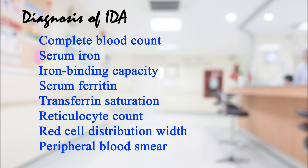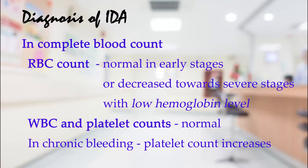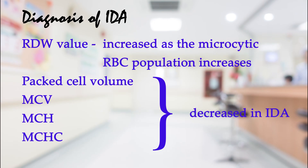Complete blood count, serum iron, iron binding capacity, serum ferritin, transferrin saturation, reticulocyte count, red cell distribution width, and a peripheral blood smear are useful tests to diagnose IDA; bone marrow examination is also done rarely. In the CBC, RBC count is either normal in early stages or decreased in severe stages with low hemoglobin. WBC and platelet counts are mostly normal, though platelet count increases in chronic bleeding. RDW value is increased as the microcytic RBC population increases.